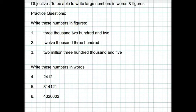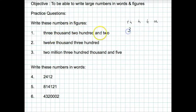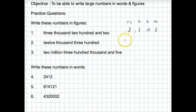So the first one: we're going to start off with writing these in figures. We've got 3,202. If you're not sure how to do this, it's a good idea to write your headings for the columns of place value — units, tens, hundreds and thousands. Then we can clearly see we've got 3,000, two hundreds, no tens, but two units. So our answer is 3,202. You can put a comma to separate the thousands and the hundreds.